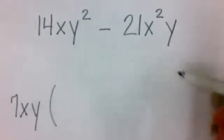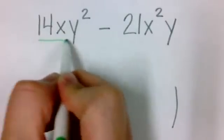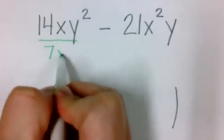And we're going to put that in front of a parentheses. And then we're going to fill the parentheses with what we get when we divide each of the terms by the seven xy.